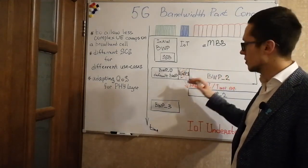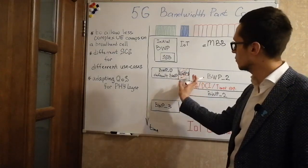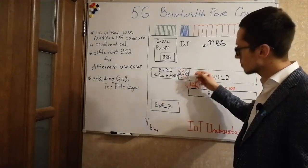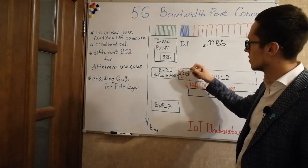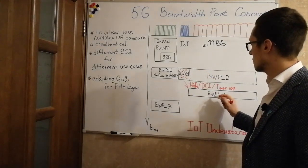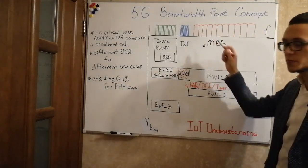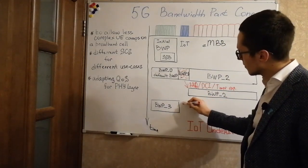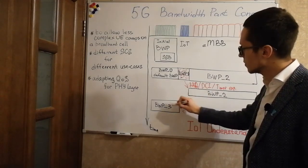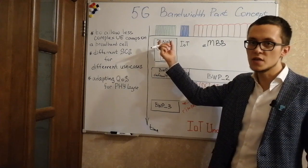While in connected mode, UE can change between different subcarrier spacings and different bandwidth parts at different frequency domain locations. For example, at one point in time UE operates within one bandwidth part, then using a DCI command it switches to a bandwidth part with larger subcarrier spacing. Then by timer expiry, UE switches to a bandwidth part with narrow subcarrier spacing and narrow bandwidth to save battery power.